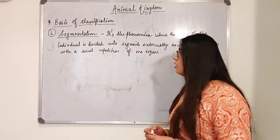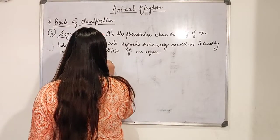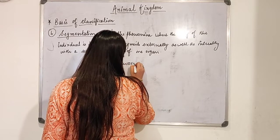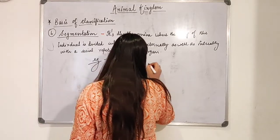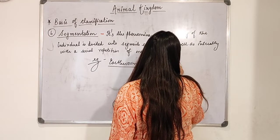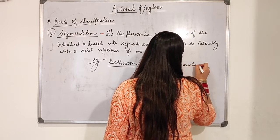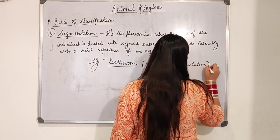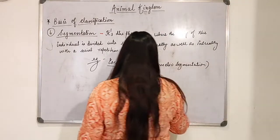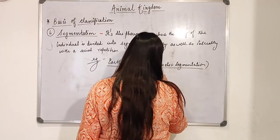The best example to give for segmentation is the earthworm. Earthworm shows metameric segmentation. Metameric segmentation is shown in earthworm, and the process is known as metamerism.